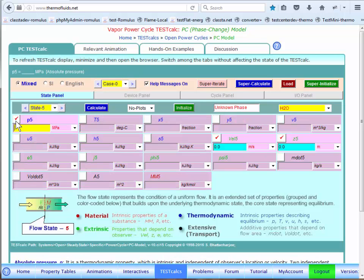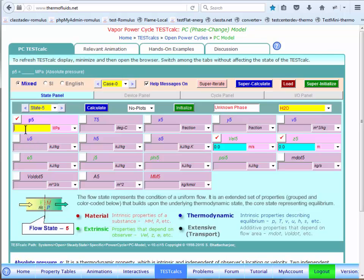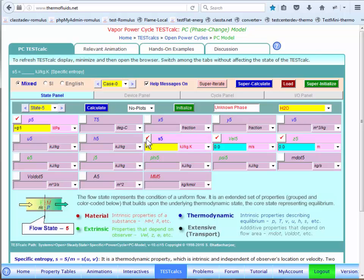State 5 is the isentropic pump exit. So entropy, and of course, pressure at state 5 must be same as pressure at 1 in an ideal cycle. Boiler pressure—the boiler doesn't have any pressure loss. So we can write pressure at 5 equals pressure at 1 and entropy hasn't changed.